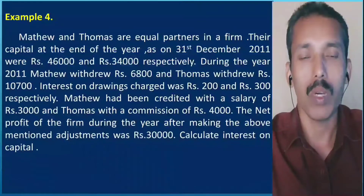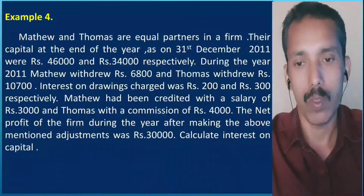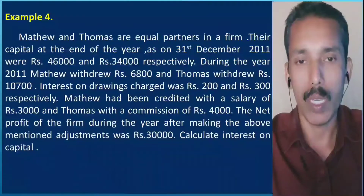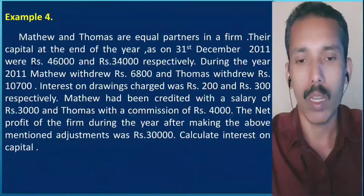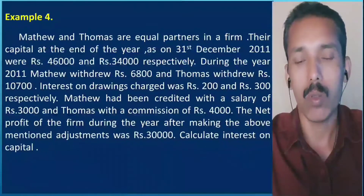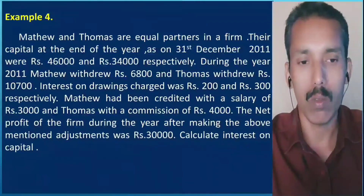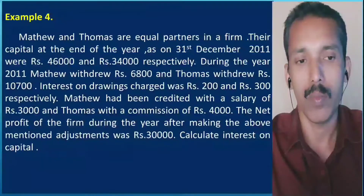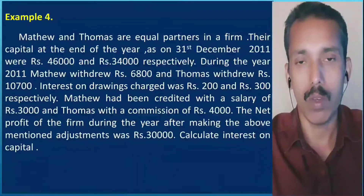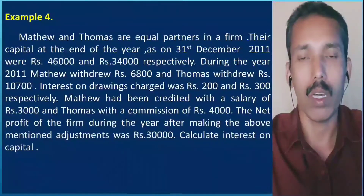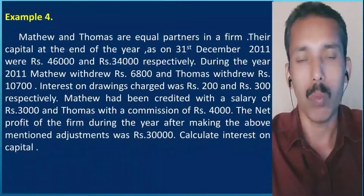Example 4: Matthew and Thomas are equal partners in a firm, with a profit sharing ratio of 1:1. The capital at the end of the year, as on 31 December 2011, were Rs. 46,000 and Rs. 34,000 respectively. The closing capital is given for both Matthew and Thomas.